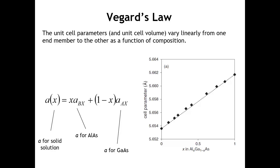We can get a homogeneous crystal that has any composition between the two end members. What Vegard's Law tells us is that the size of the unit cell is going to vary linearly from one end to the other. These are cubic materials with the sphalerite structure. Aluminum arsenide has a smaller lattice constant, just a little bit less than 5.653, and gallium arsenide has a larger lattice constant. The evolution from one side to the other is basically a linear evolution.